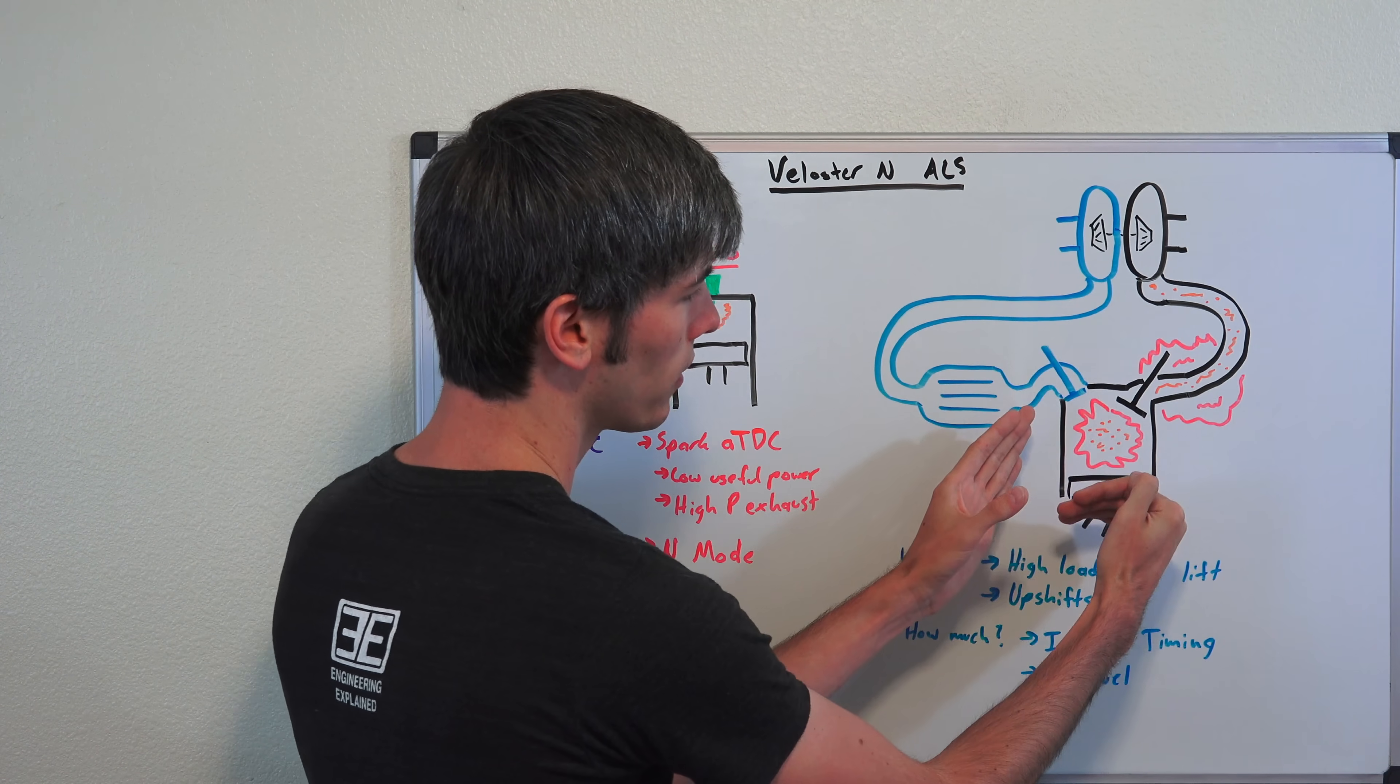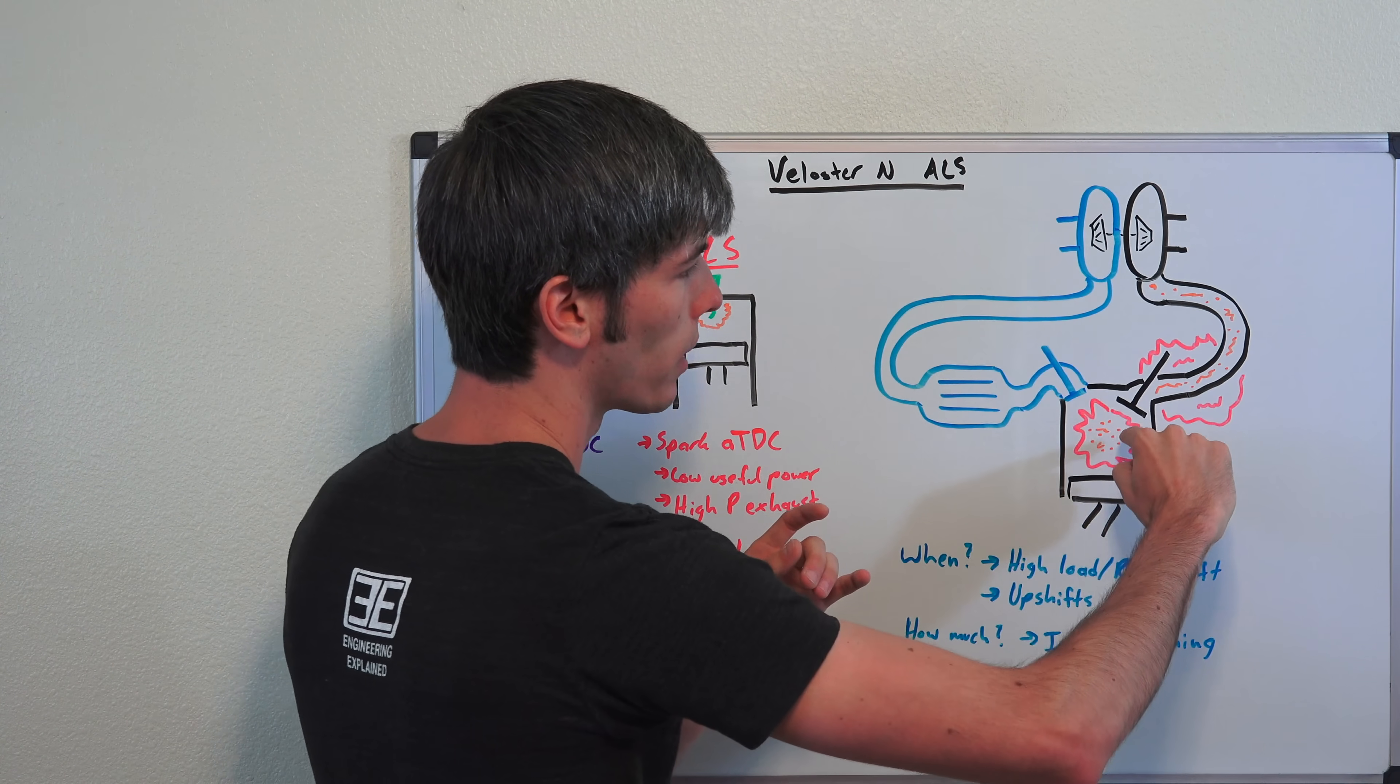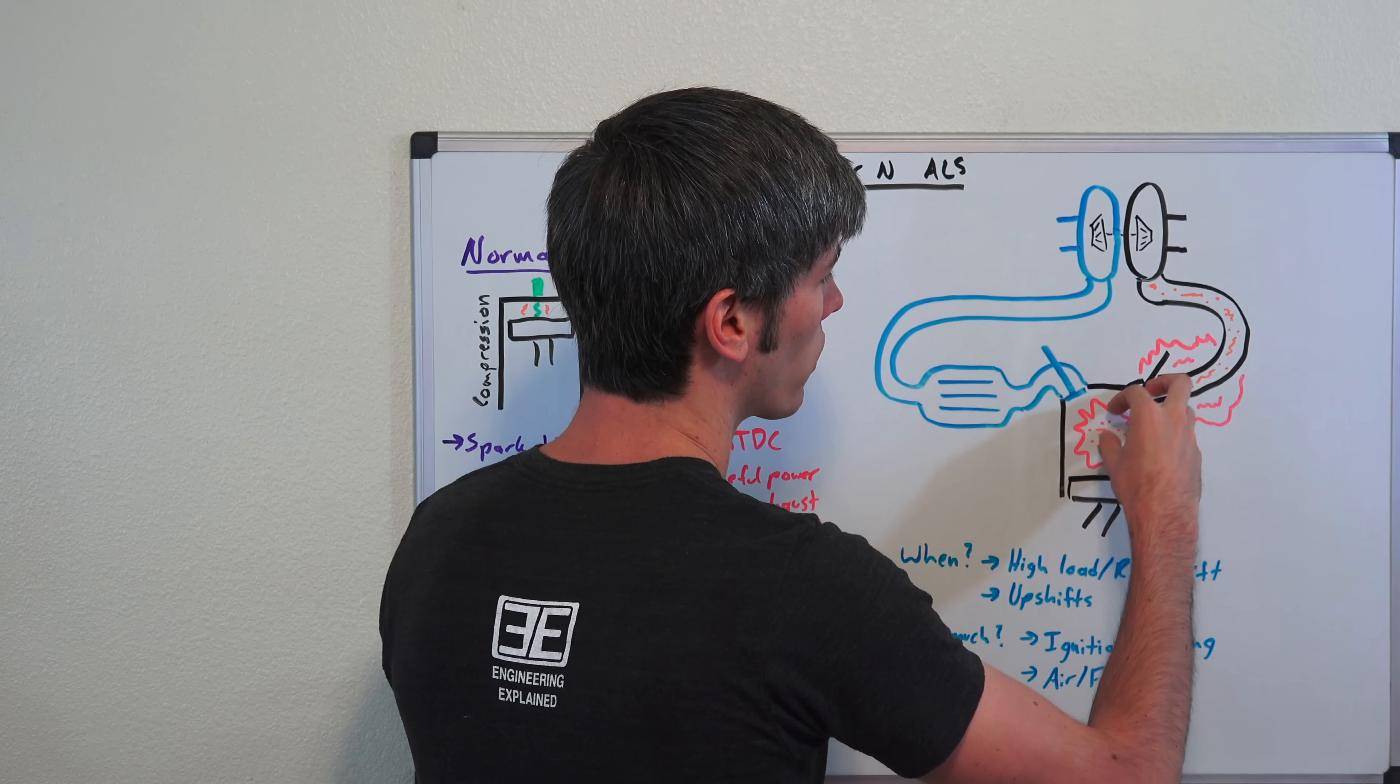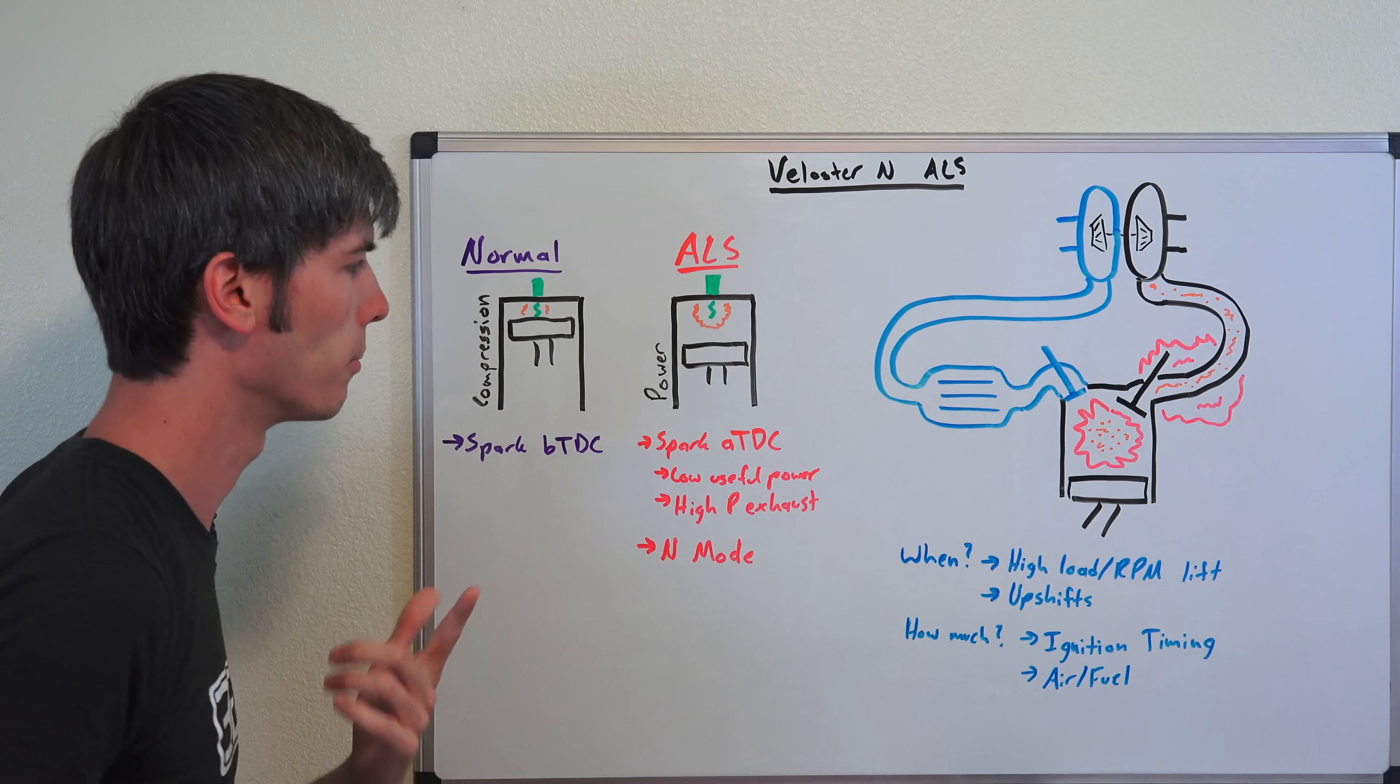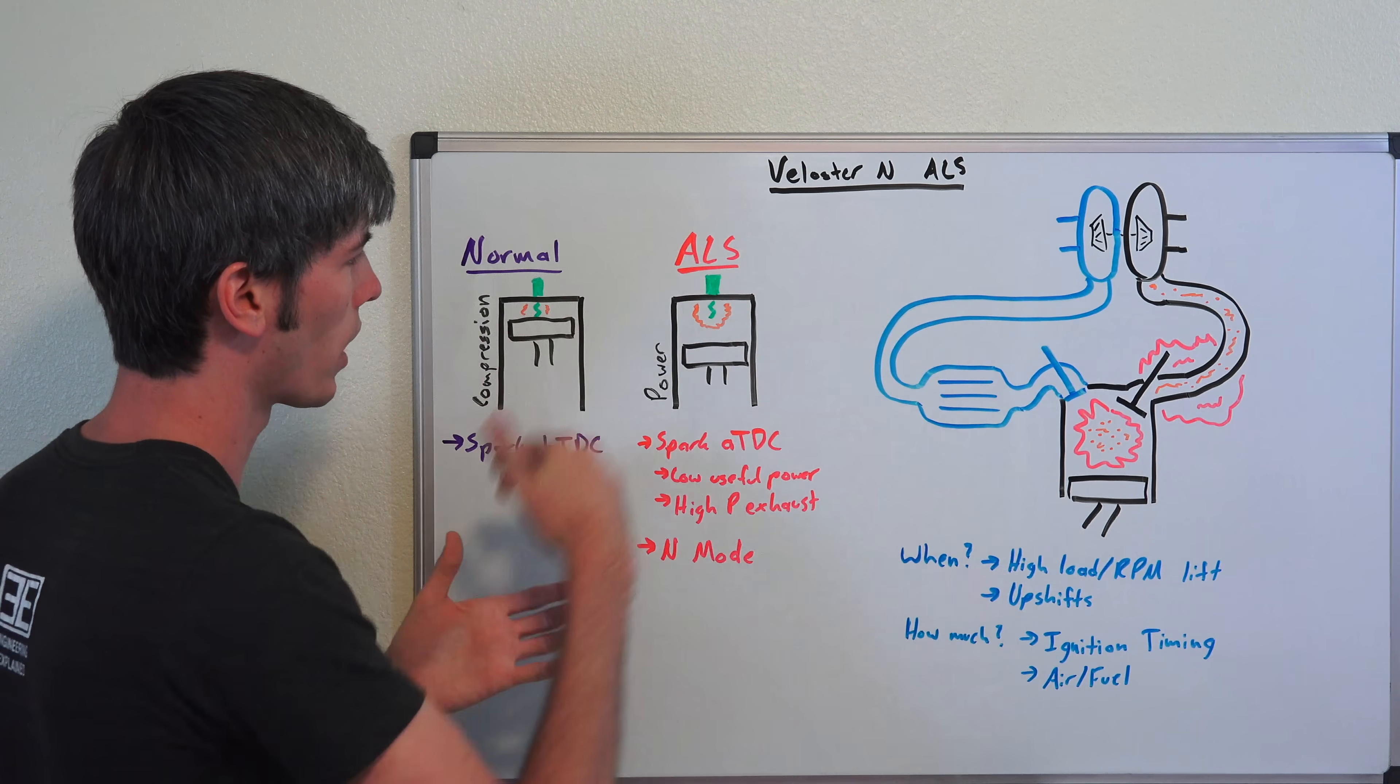The reason why you do this is because by the time that piston gets down to the bottom and the exhaust valve is open, you still have combustion occurring. So it goes out the exhaust. You have combustion still occurring as the exhaust valve is open and so that high pressure keeps your turbocharger spooled up.